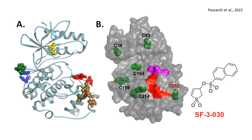The adjacent SF-3-030 chemical structure reveals a sulfonyl-based reactive group enabling selective cysteine modification. This mechanism effectively blocks ERK-driven pathways in cancer cells without fully inhibiting kinase function, making SF-3-030 a promising function-selective inhibitor.